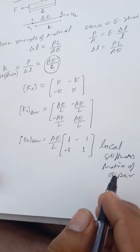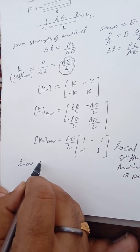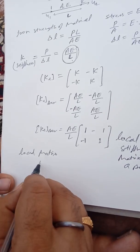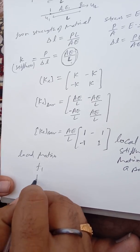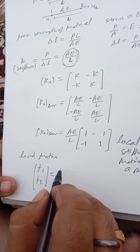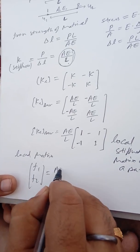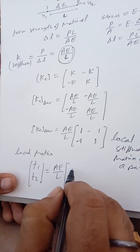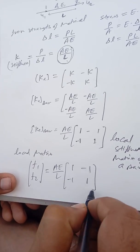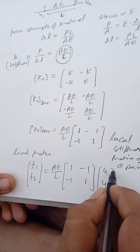Now we are writing the load matrix. The load matrix is: {F1; F2} = (AE/L) × [1, -1; -1, 1] × {U1; U2}.